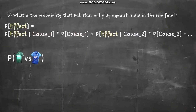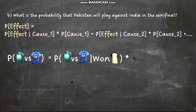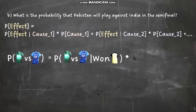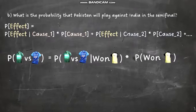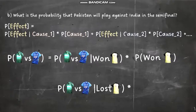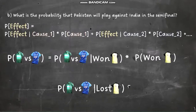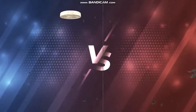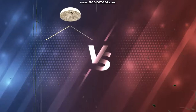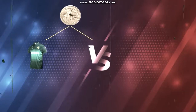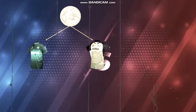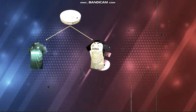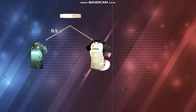For this, we used different theorems of probability and calculated the winning probability of Pakistan while the dependency was on the toss. Similarly, the theorem of total probability was discussed, and on that basis, eight different probabilities were calculated. That was all about the previous question, and we discussed the diagram very briefly.